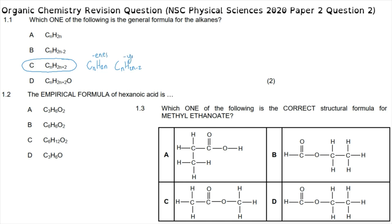Question 1.2 asks for the empirical formula of hexanoic acid. We start by drawing the molecular formula for hexanoic acid: meth-eth-prop-but-pent-hex, and the anoic acid gets the group with a double-bonded carbon and a hydroxyl group, where there are hydrogens to complete the four bonds on each carbon.